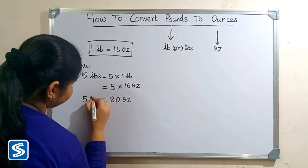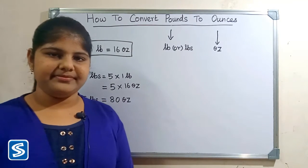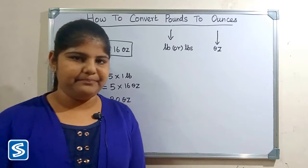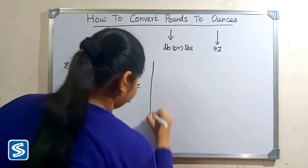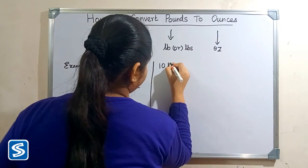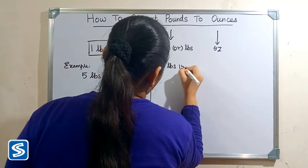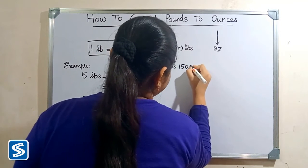5 multiply 16 ounces will be 80 ounces. So 5 pounds is equal to 80 ounces. Next we will take one more example: 10 pounds 150 ounces.